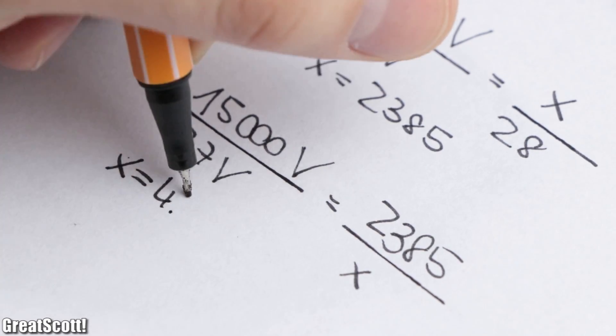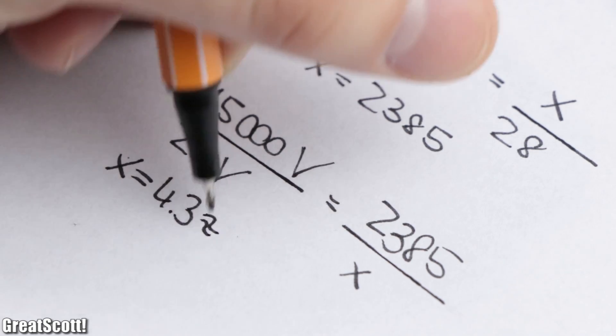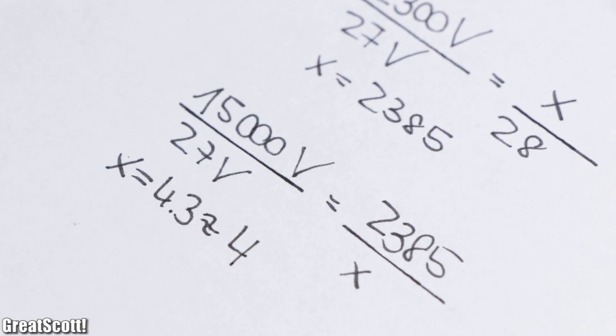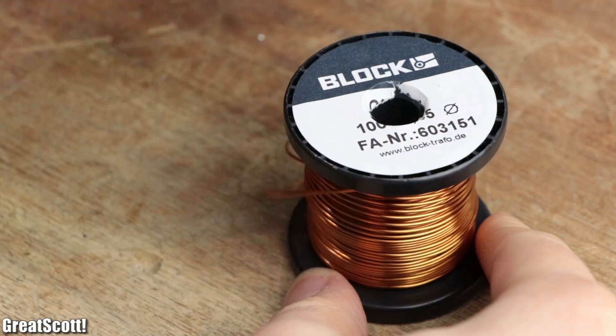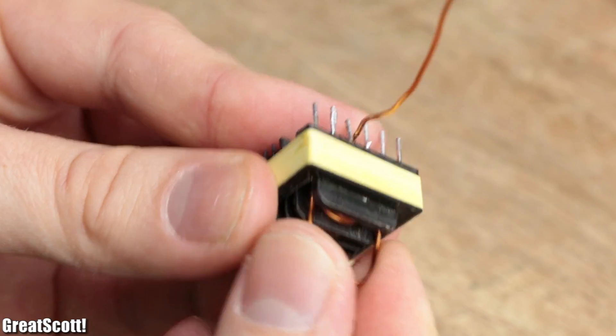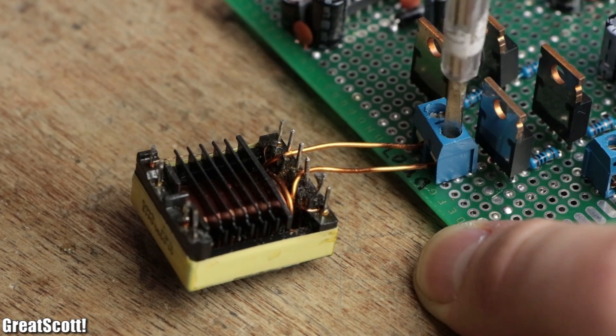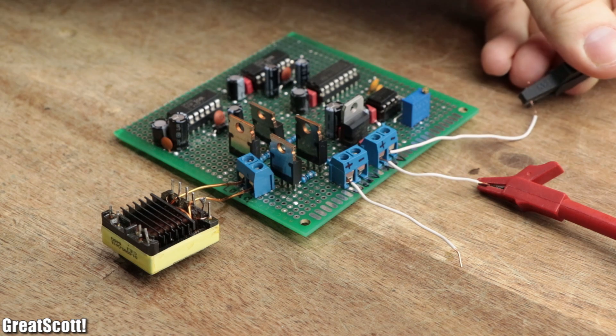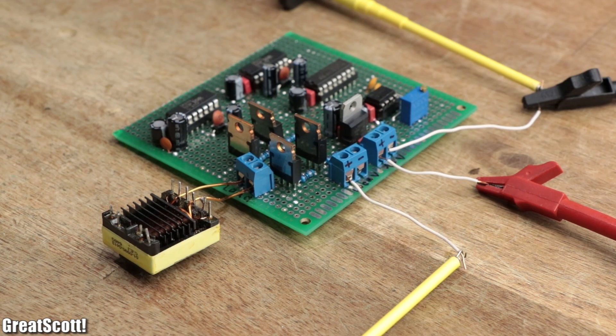That means we need around four windings on the primary to get around 15,000 on the secondary. For our first tests I used 0.85 millimeter enamel copper wire to create the four turns and hooked it up directly to the output of my square wave inverter circuit from my wireless energy project.